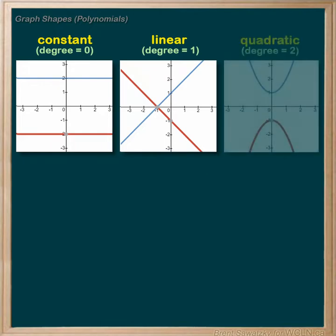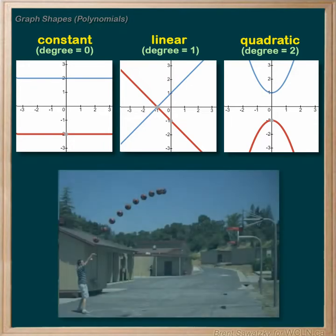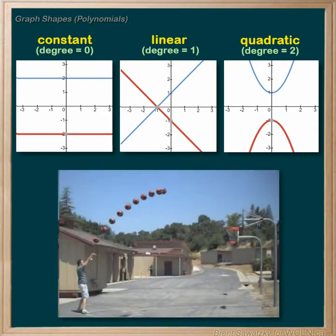Moving to a degree of two, we have our quadratic relationship, and it looks like a big U. Positive in blue and negative — the reflection — in red. Quadratic graphs are sometimes called parabolas, and you see a parabola every time you toss a ball into the air, noting the ball's path while it's in the air.